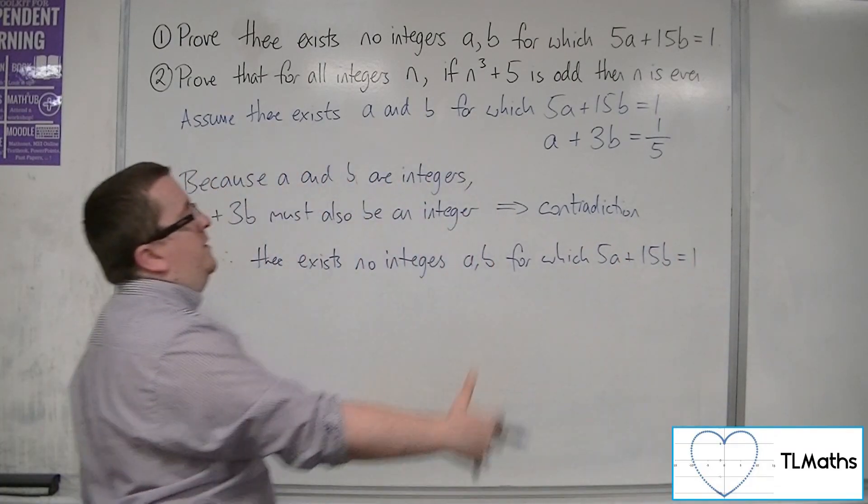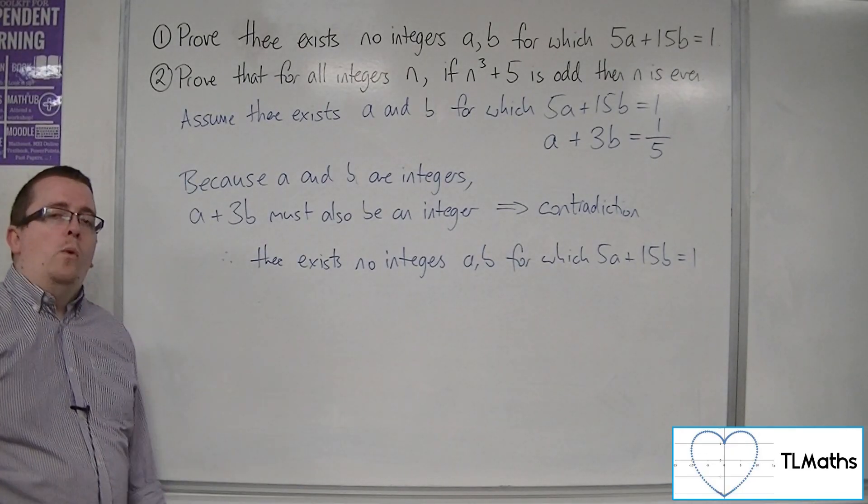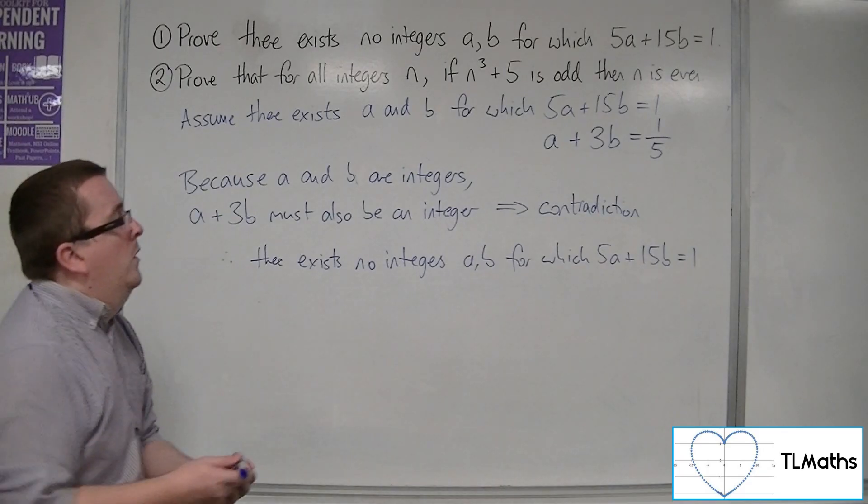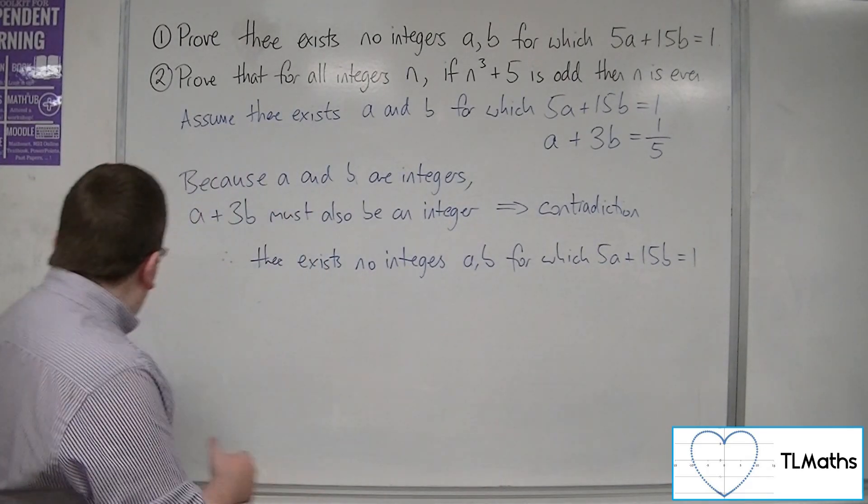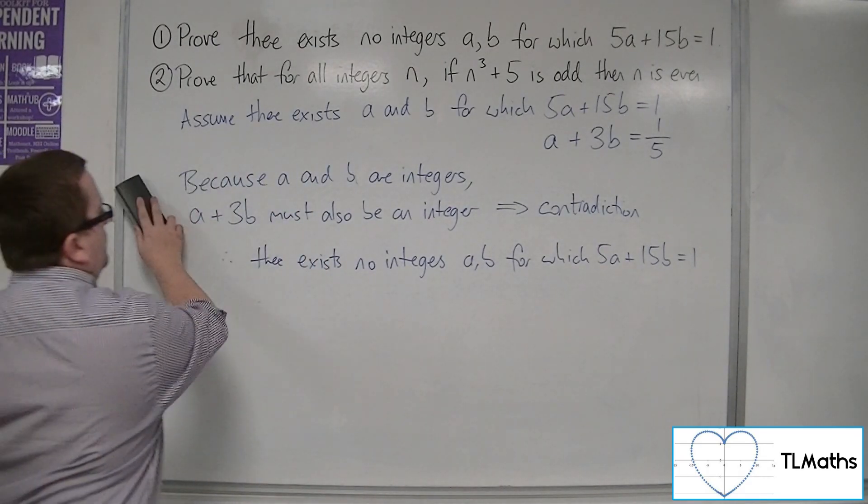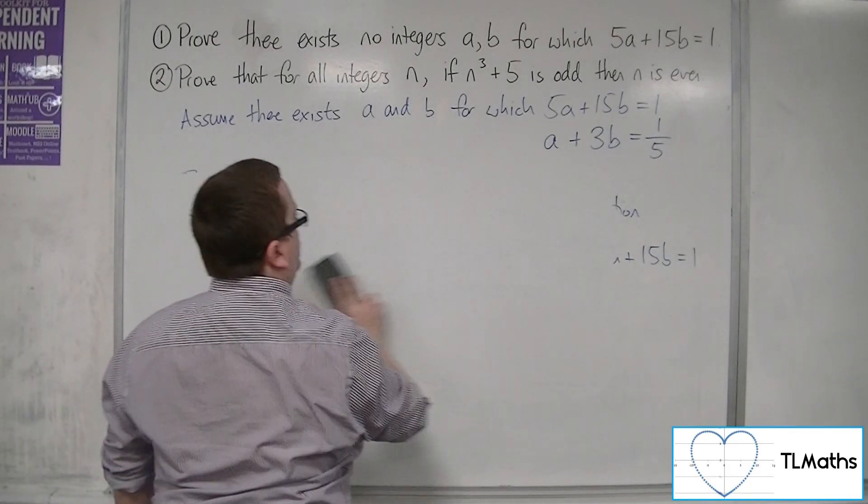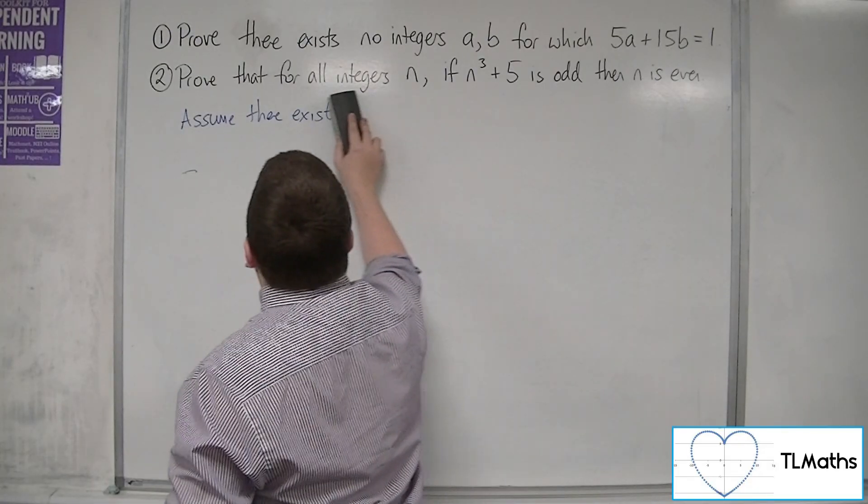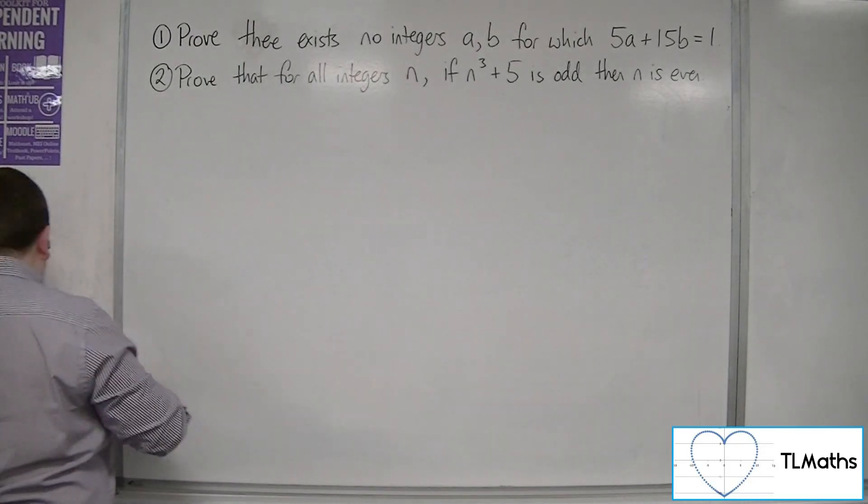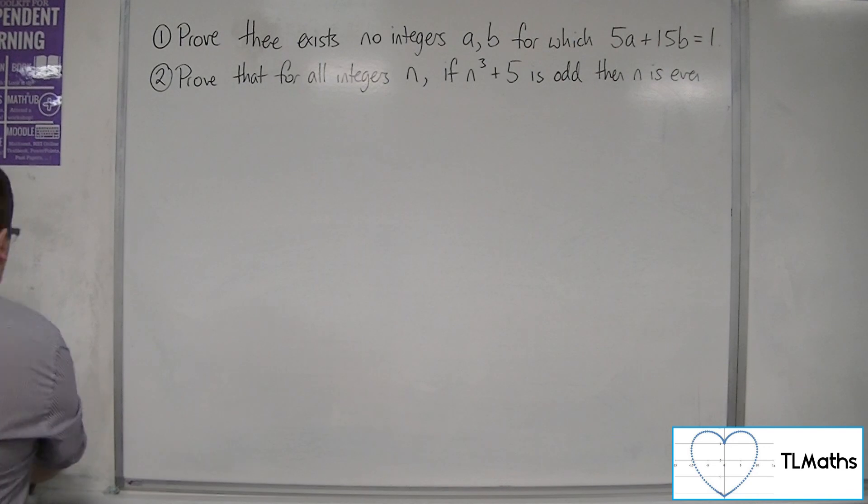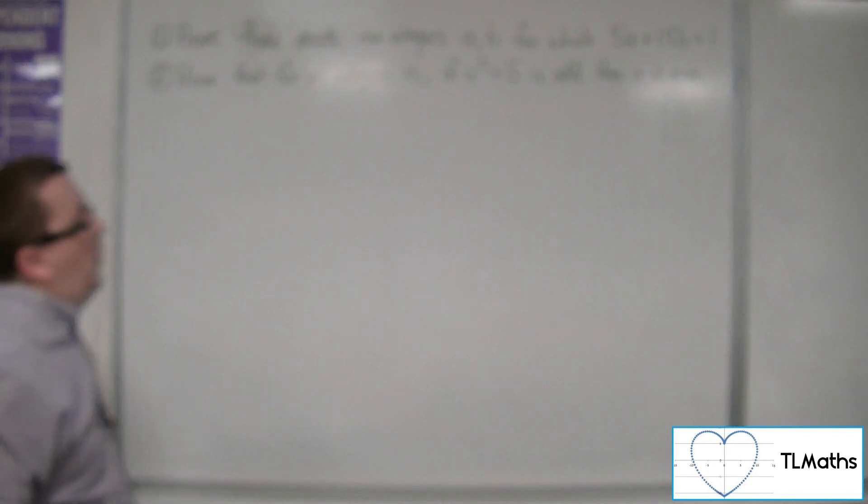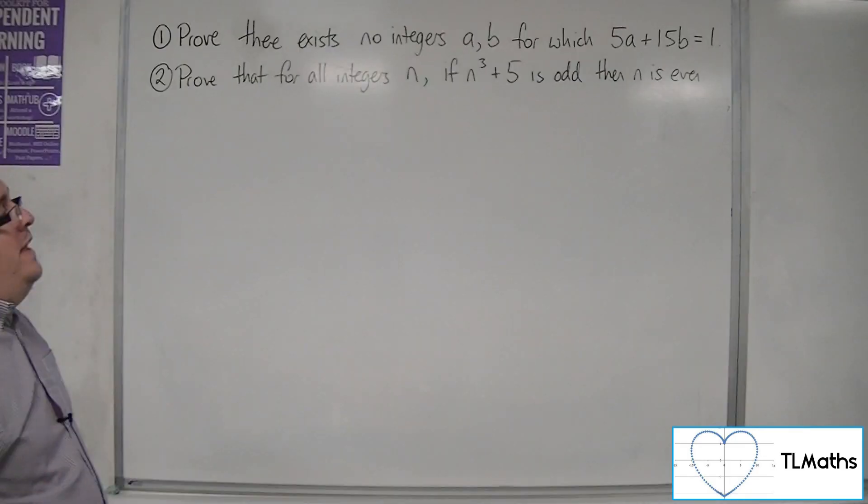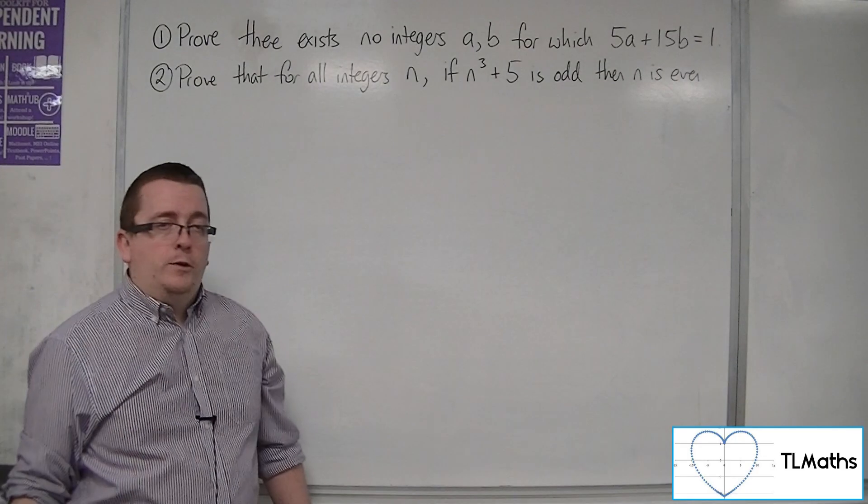So that's quite a nice simple one. So let's have a look at number 2. So number 2 is saying that prove that for all integers n, if n cubed plus 5 is odd, then n is even.